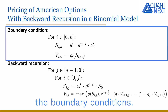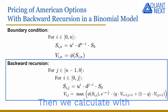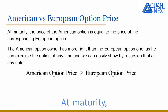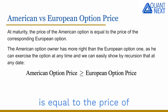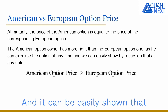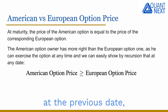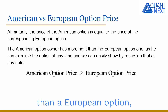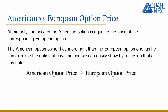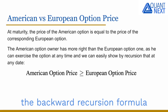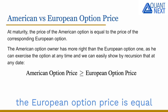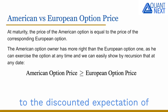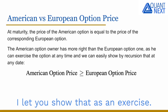First, we determine the boundary conditions. Then we calculate with a backward recursive algorithm the price of the American option. At maturity, the price of the American option is equal to the price of the corresponding European option. And it can be easily shown that at the previous date, the American option, which gives more rights than a European option, has a higher price. This can be shown by using the backward recursion formula for the American option price and the fact that the European option price is equal to the discounted expectation of the future price. I'll leave that as an exercise.